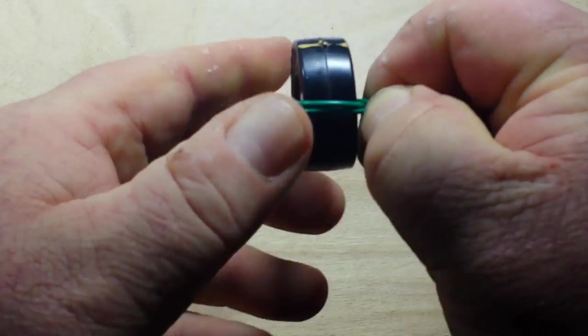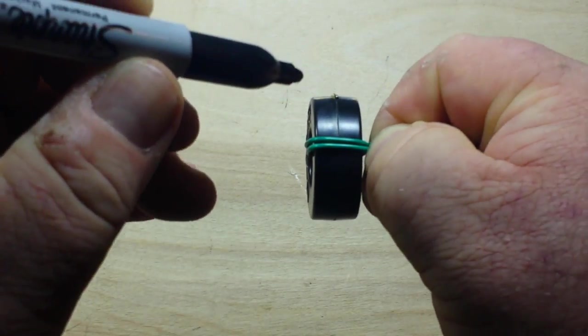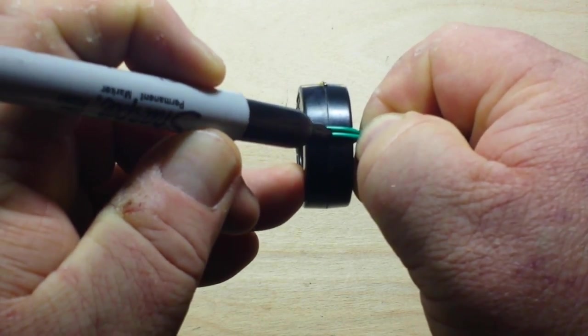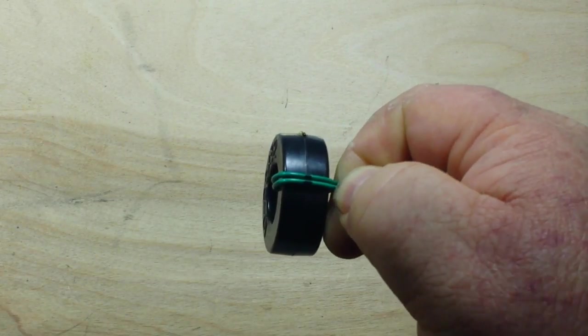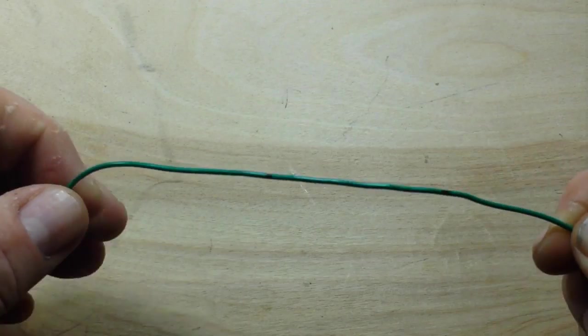You're going to bring it up like this so that you have a turn and a half. Once you have that turn and a half, just take a marker and draw right across the center of it. Pretty simple so far, right?